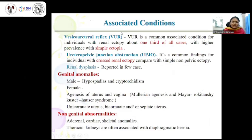Common associated conditions with ectopic kidneys include vesicoureteric reflux, ureteropelvic junction obstruction, and renal dysplasia. VUR accounts for around one third of all cases and is more common with simple ectopic kidneys. Ureteropelvic junction obstruction is more common in crossed renal ectopia compared to simple non-pelvic ectopia. There are also a few cases reported with renal dysplasia.